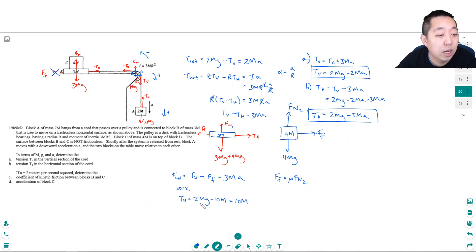So I have 10M minus the force of friction equals 3M times 2. That equals 6M. So the force of friction equals 4M.